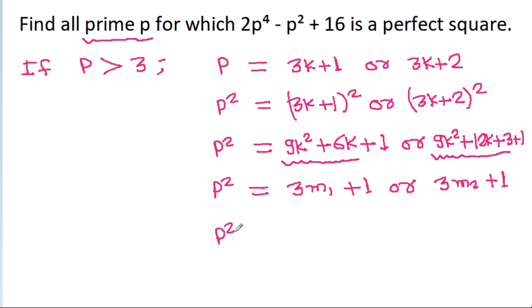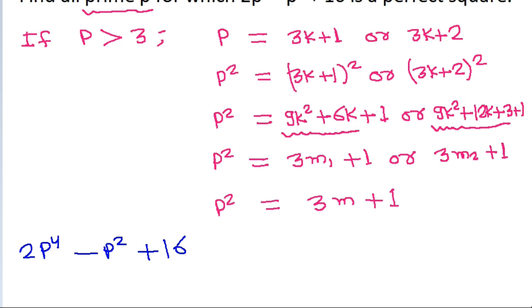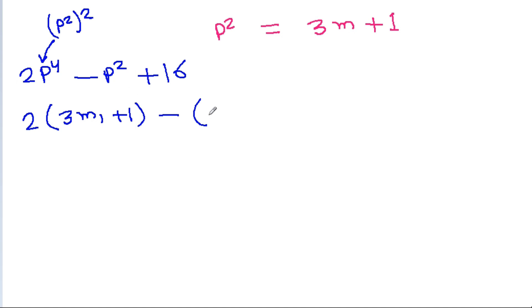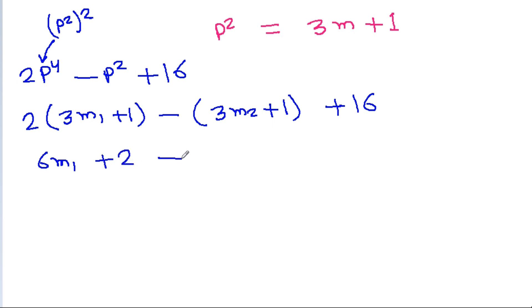So we get p² = 3m + 1. Now we evaluate 2p⁴ - p² + 16. Since p² = 3m + 1, we have p⁴ = (3m+1)², so 2p⁴ is of the form 3m₁ + 2. Then 2p⁴ - p² + 16 becomes 3m₁ + 2 - (3m₂ + 1) + 16, which simplifies using 16 = 15 + 1.